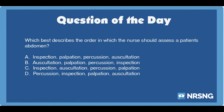Again, which best describes the order in which the nurse should assess a patient's abdomen? A. Inspection, palpation, percussion, auscultation. B. Auscultation, palpation, percussion, inspection. C. Inspection, auscultation, percussion, palpation. D. Percussion, inspection, palpation, auscultation.